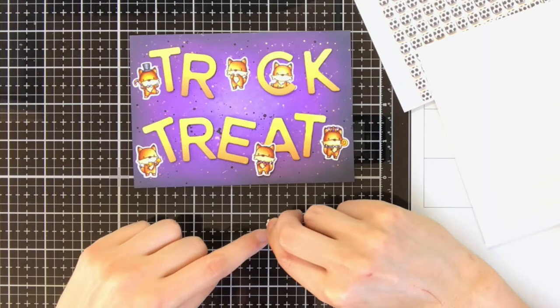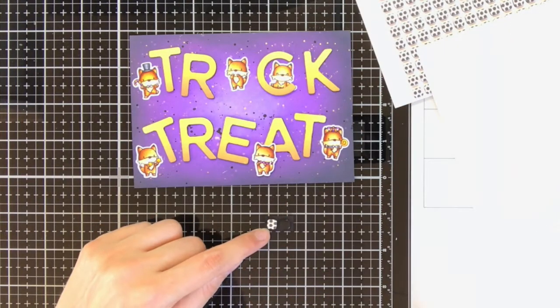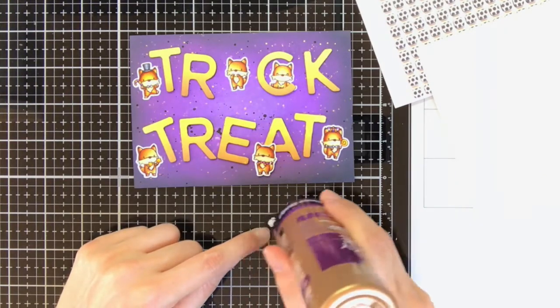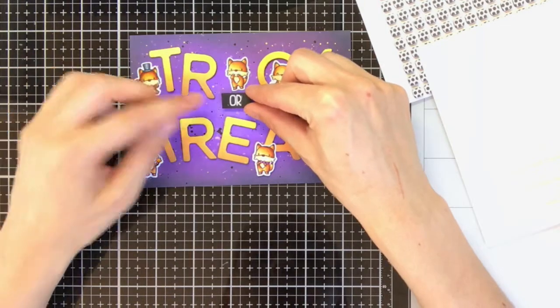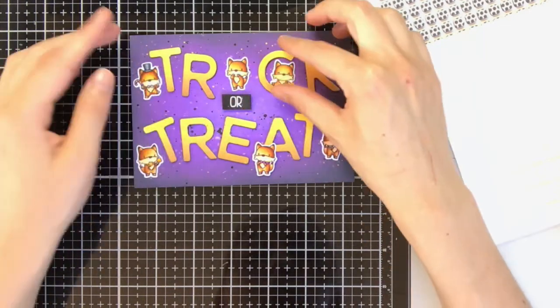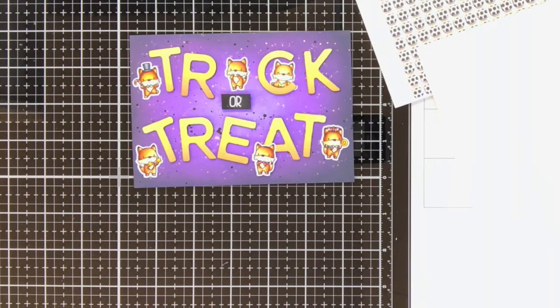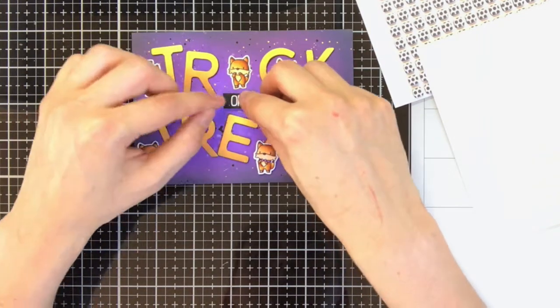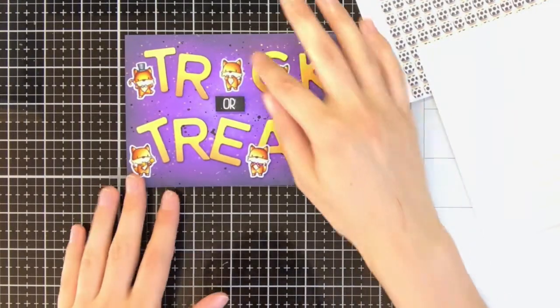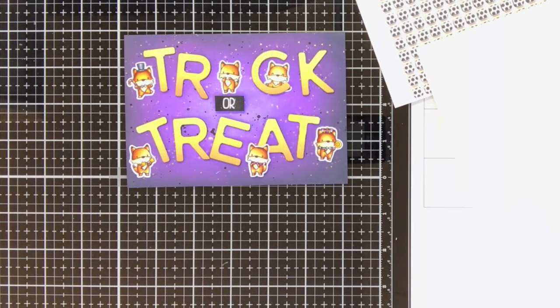All the letters I adhered with liquid glue. For the foxes and also for the OR sentiment I am going to use these foam squares from Scrapbook Adhesive. Because I stamped the OR on black cardstock I am also using the black foam squares so you will not notice them that well. But for adhering all the little foxes I am using the white foam squares.